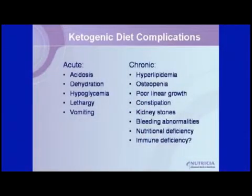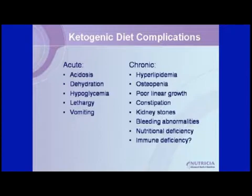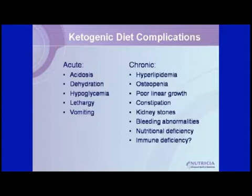The chronic complications of the ketogenic diet include nutritional deficiencies, which we address with vitamins and supplements during treatment. However, we can't replicate exactly what nature intended, so we see osteoporosis or bone loss, and poor linear growth — kids don't grow as tall while on the diet. The good news is that once they come off the diet, they catch up in growth. Other chronic complications include kidney stones and constipation.